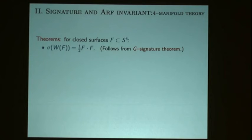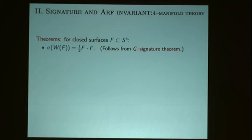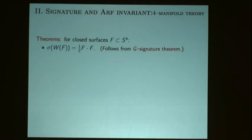The second technique is the use of signatures and Arf invariants. I need to review a little four-manifold theory to see how these feed into genus problems. The first result: in S4, if you have a closed surface, the signature of the two-fold branch cover of the four-ball branched over the surface is one-half the self-intersection number of F.